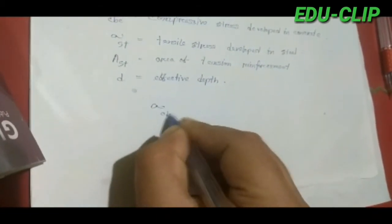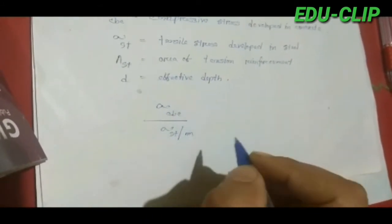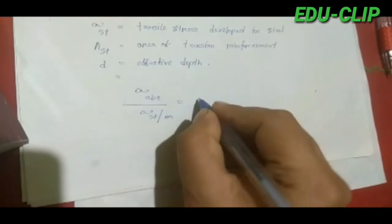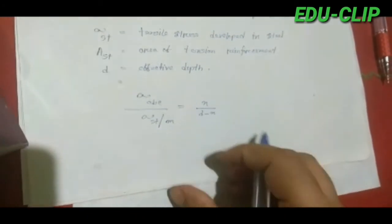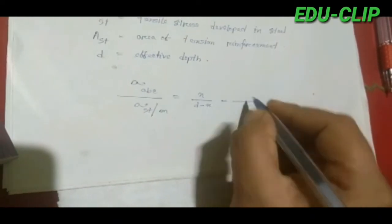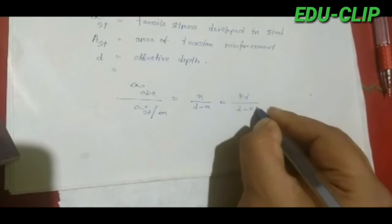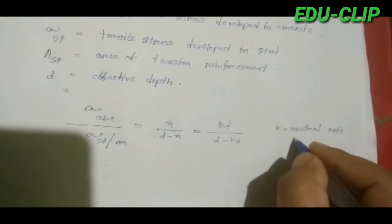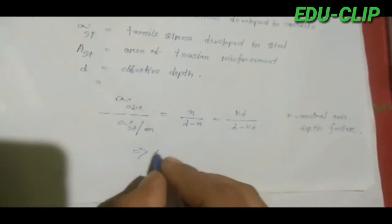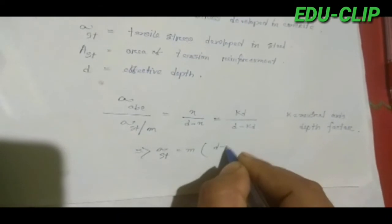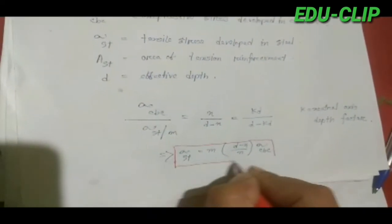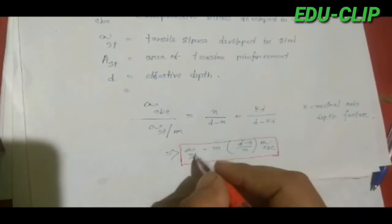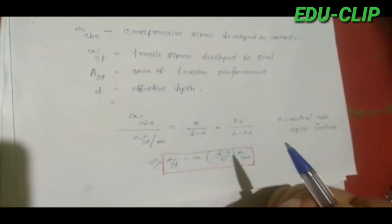From this stress diagram we get: sigma_cbc / sigma_st = n / (D minus n). We can write n equal to K·D, where K is the neutral axis factor. From this, sigma_st = m · [(D minus n) / n] · sigma_cbc, which gives us the stress in steel.